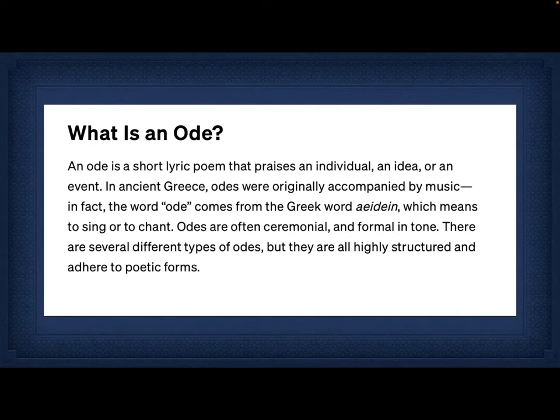What is an ode? An ode is a short lyric poem that praises an individual, an idea, or an event. It is written in a lyrical style — very musical and mostly short; odes are not very long poems. In ancient Greece, odes were originally accompanied by music and were written to be sung with an audience there to appreciate them. That is why the wording should be short and musical.